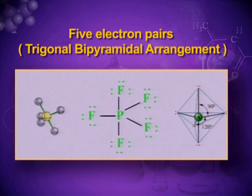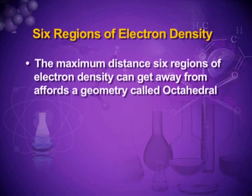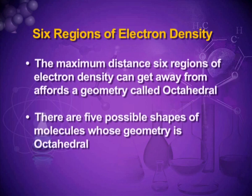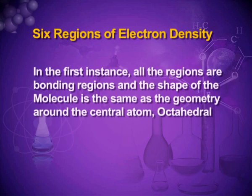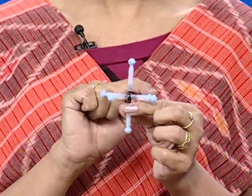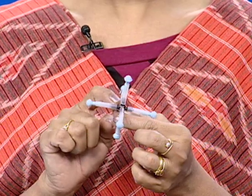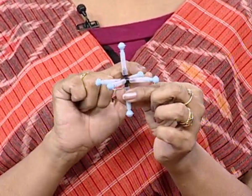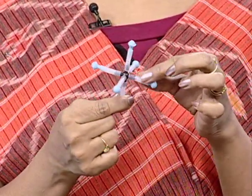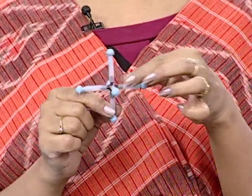With six regions of electron density, the geometry is called octahedral. There are five possible molecular shapes whose geometry is octahedral. In the first instance, all regions are bonding regions and the shape is octahedral — example SF6. The black atom is sulfur and the blue atoms are fluorine. In a regular octahedral molecule, all angles are 90 degrees.